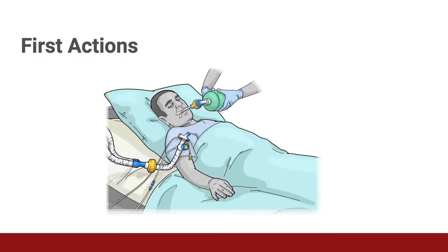If a problem is not readily identified in your survey — tracing the vent power and oxygen sources through the machine and tubing to the patient — the next step should be to remove the patient from the ventilator and provide manual bag valve breaths with 100% oxygen. This helps exclude mechanical problems with the vent, power source, or tubing. It also allows you to feel how easy it is to bag the patient and assess chest rise. Significant resistance could indicate an obstruction such as a mucus plug. Lack of resistance and chest rise could indicate that the endotracheal tube balloon is deflated or there is a leak.